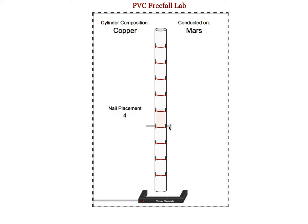Students will then pull the nail out by clicking on the head of the nail, and the cylinder will go through the PVC pipe, go through the photo gate, and the program will record — just like Logger Pro would — the moment at which the gate is blocked and the moment at which the gate becomes unblocked. It's the difference between these two that is important.